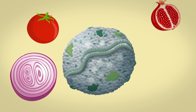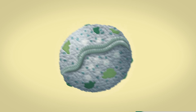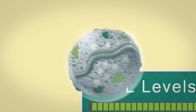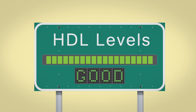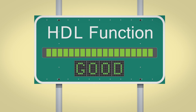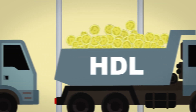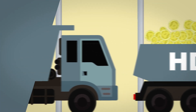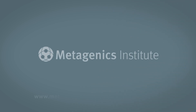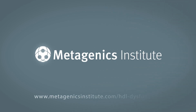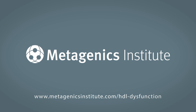Clinical research also shows supplements containing lycopene, quercetin, and pomegranate polyphenols can improve the actions of PON and other proteins important for HDL function. This allows more cholesterol to leave the body, and HDL to provide its cardiovascular benefits. Visit our website for additional resources and learn more about HDL dysfunction today.